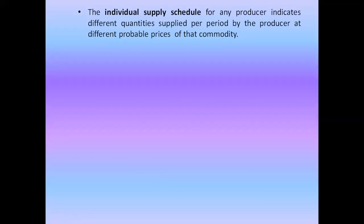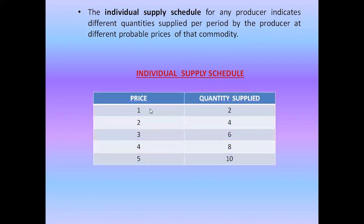Now let us see what is the individual supply schedule. It indicates different quantities supplied per period by a producer at different possible prices of that commodity. It is basically a table with price and quantity supplied. At price one a producer is willing to supply two units; at price two, quantity supplied increases to four units, and so on. The individual supply schedule is a table showing prices and quantity supplied by a single producer.